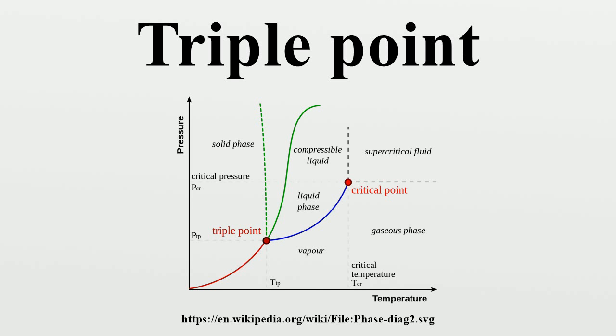There are also triple points for the coexistence of three solid phases. For example, ice II, ice V, and ice VI at 218 K and 620 MPa.